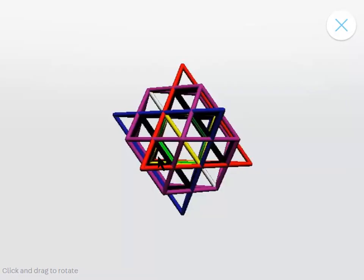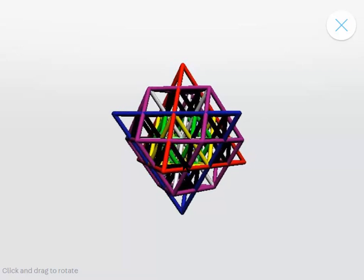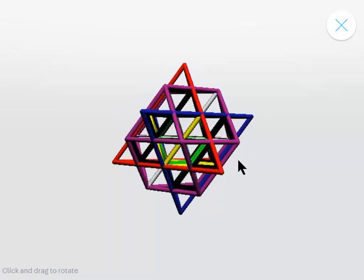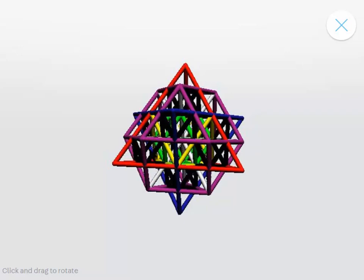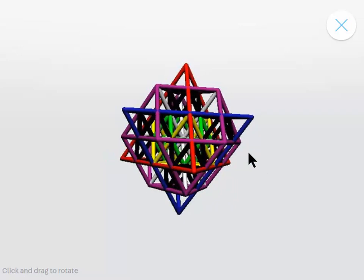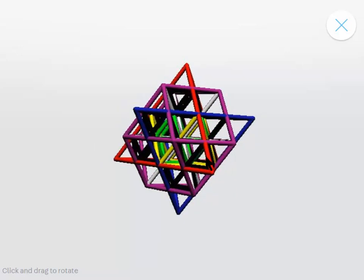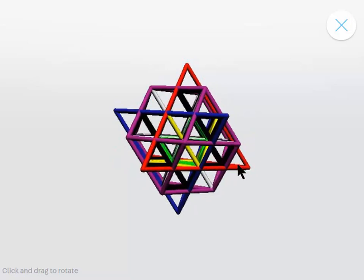You'll see there's a red triangle pointing upwards, tetrahedron sorry, a four-sided triangular structure pointing upwards, and there's a blue one pointing downwards. In between them we have this purple cube octahedron.